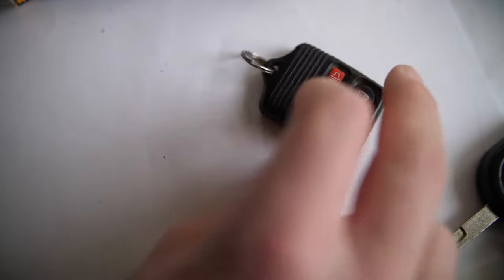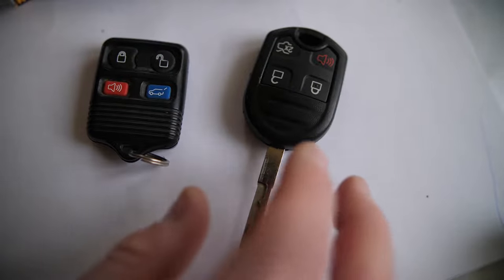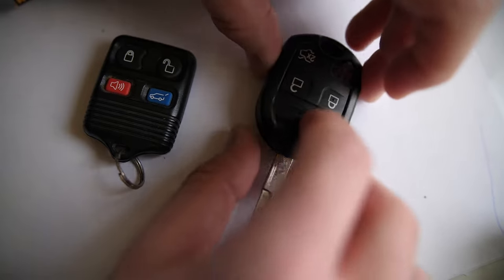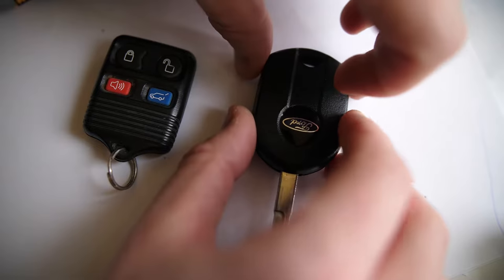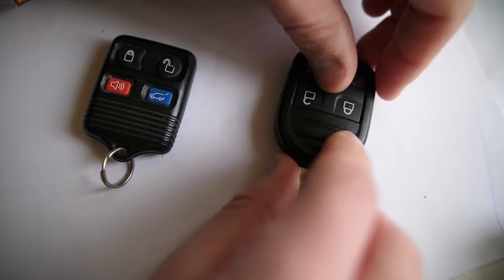Now some models, maybe some older ones, will have a replaceable battery, but it's not necessarily as easy to get into. So if you look at this Ford key, there's not really a backing here that looks like it pops off, although there is a line that goes all the way around the key.